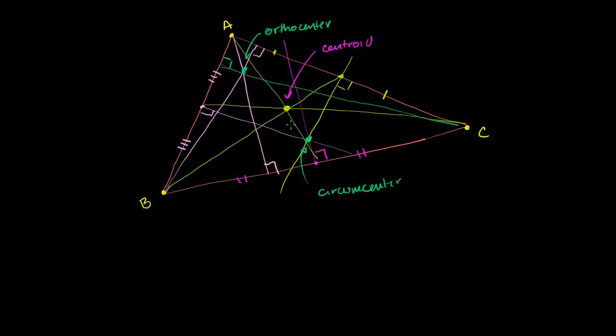But what's really neat, and it's maybe not completely apparent by the way I drew it because I just drew it freehand, is that these three points will definitely be on the same line. If this was an equilateral triangle, they would actually be the same point. But for any other triangle, there will be different points, and they will be on the same line.